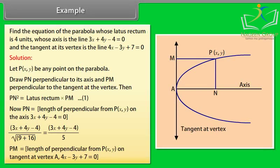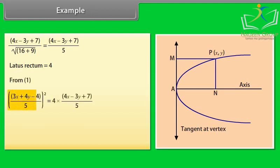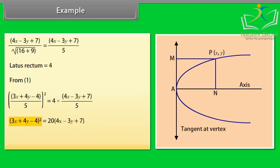PM = length of perpendicular from P(x, y) on the tangent at vertex: 4x − 3y + 7 = 0, which equals (4x − 3y + 7) / √(16 + 9) = (4x − 3y + 7) / 5. Latus rectum = 4. From equation 1: ((3x + 4y − 4) / 5)² = 4 × (4x − 3y + 7) / 5. Therefore (3x + 4y − 4)² = 20(4x − 3y + 7). This is the required equation of the parabola.